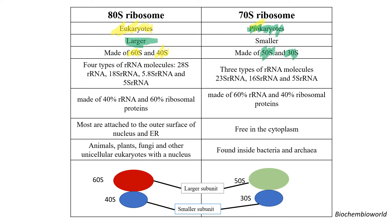The ribosome is made up of two parts: the rRNA part, that is the ribosomal RNA, and the protein part — both combine to form a ribosome. The types of ribosomal rRNA found in the 80S are four types: 28S, 18S, 5.8S, and 5S. In comparison, the 70S has three types: 23S, 16S, and 5S.